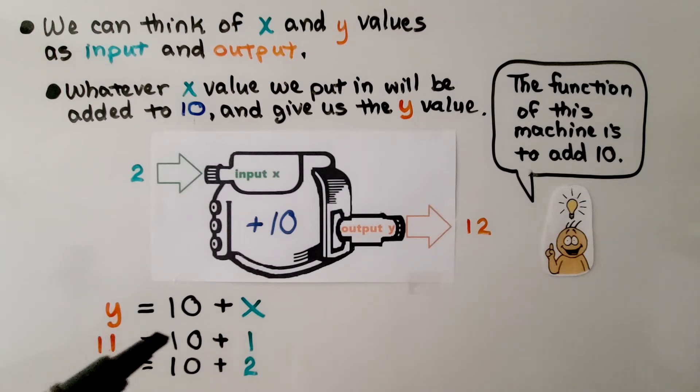We have Y = 10 + X. We would have 11 if we put a 1 in, 12 if we put a 2 in. The function of this machine is to add 10.